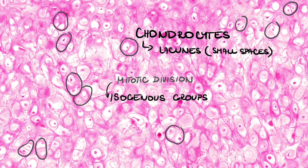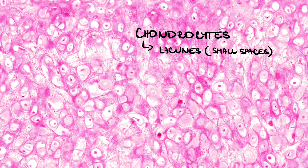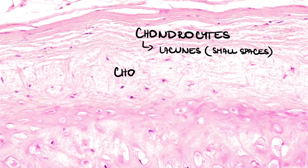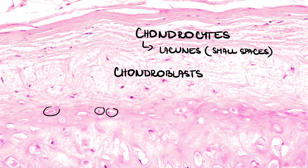In the periphery of a cartilage, there are chondroblasts — early cells that differentiate into chondrocytes. Both types of cells can mitotically divide in early development. Later, their ability to divide is diminished.